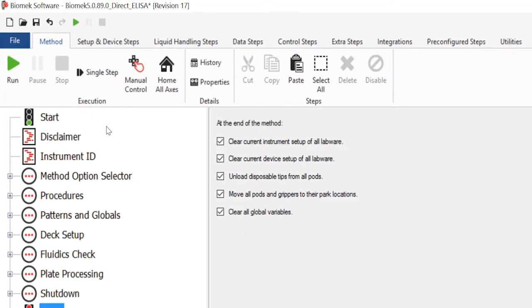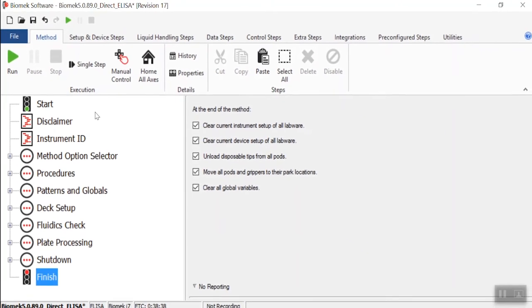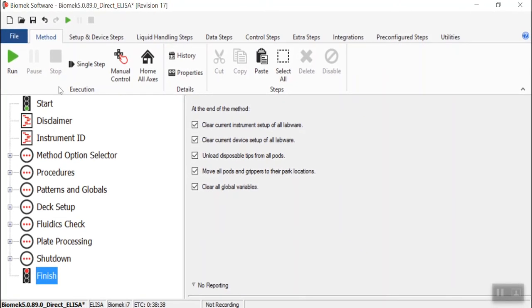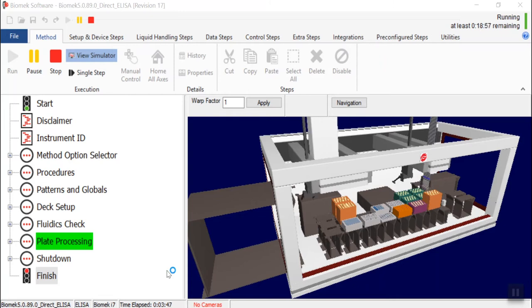The heart of the Biomech is its software. The user-friendly point-and-click interface of Biomech software lets you quickly create powerful methods. The method execution is simulated by the Biomech's 3D simulator so that you can take a peek at your ELISA method before running it.